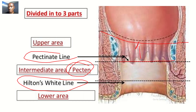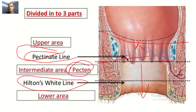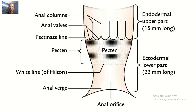The upper one-third is smaller and the lower two-thirds is longer, and the line dividing them is the pectinate line. The white line of Hilton is located at the lower limit of the pecten, at the interval between the subcutaneous external anal sphincter and the lower part of the internal anal sphincter. The external anal sphincter is the skeletal muscle on the outside, and the internal anal sphincter is the smooth muscle on the inside.